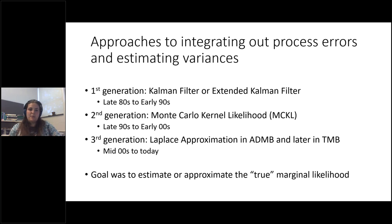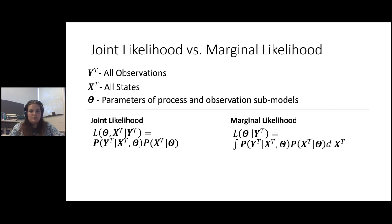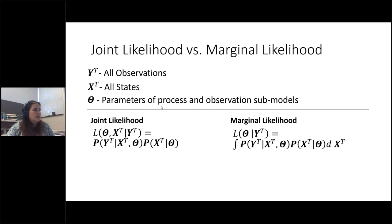The first generation of state-space stock assessment models used the Kalman filter and extended Kalman filter to approximate the complicated integral facilitating estimation. Later, Monte Carlo methods were used. The third generation and what we pursue today uses the Laplace approximation, easily accomplished in AD Model Builder and now in Template Model Builder, to integrate out process errors. The goal progressively was to estimate the true marginal likelihood as opposed to a joint errors-in-variables likelihood.